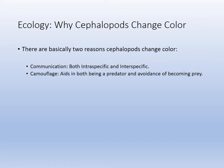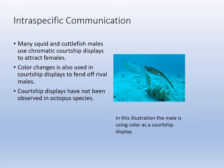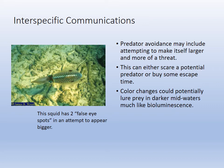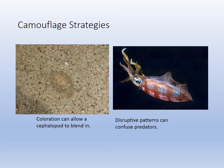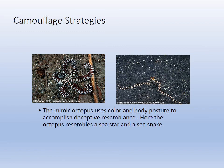Cephalopod color change serves camouflage, courtship, and communication. They try to match texture as well. False eye spots help escape predation by making them look bigger. You can see there are four squid in one picture but at first glance it only looks like two — good camouflage. Cryptic coloration and disruptive patterns confuse predators. The mimic octopus mimics sea snakes and starfish, bending its body into unique shapes to resemble other creatures.